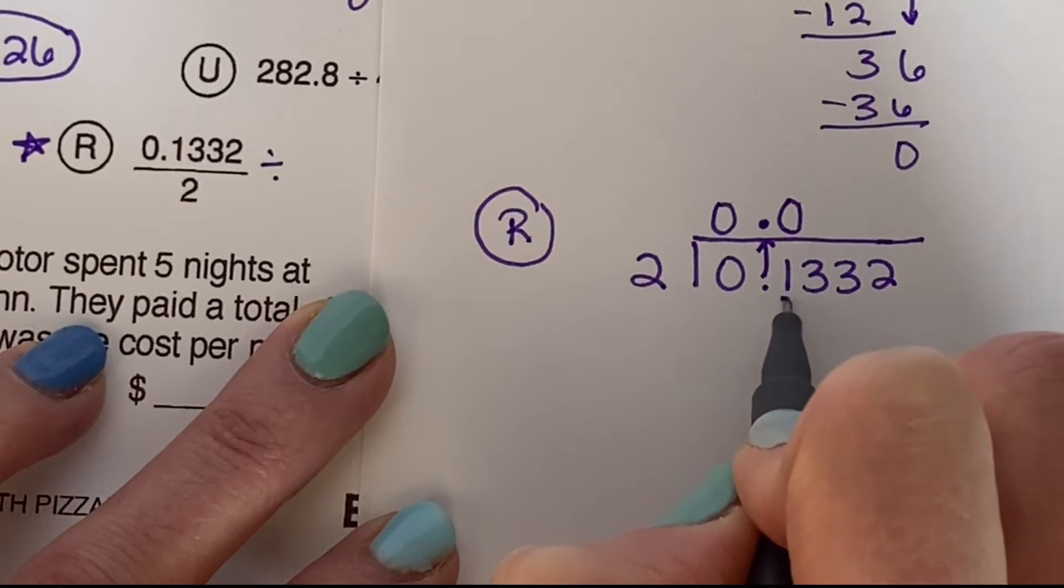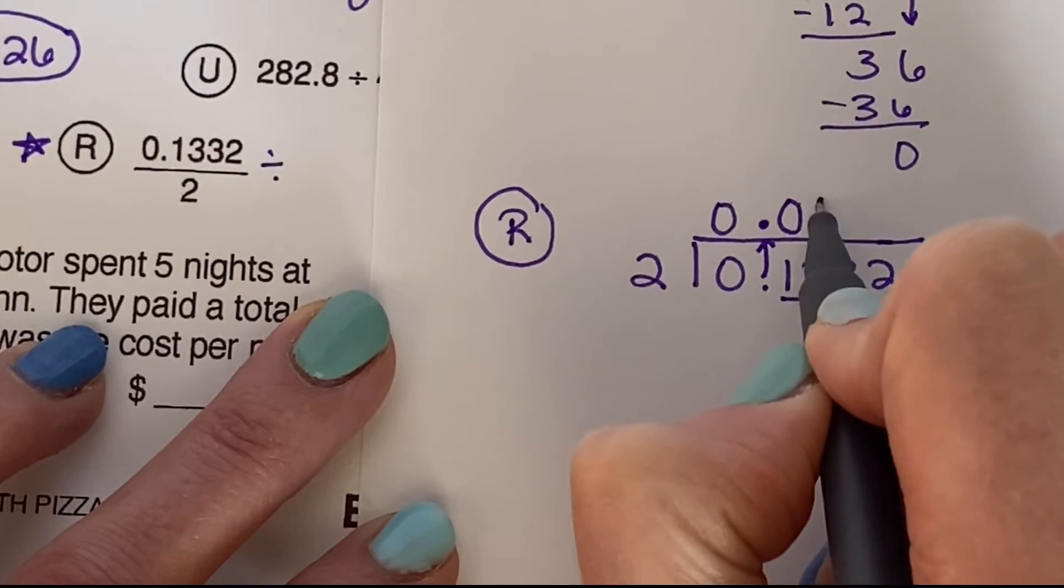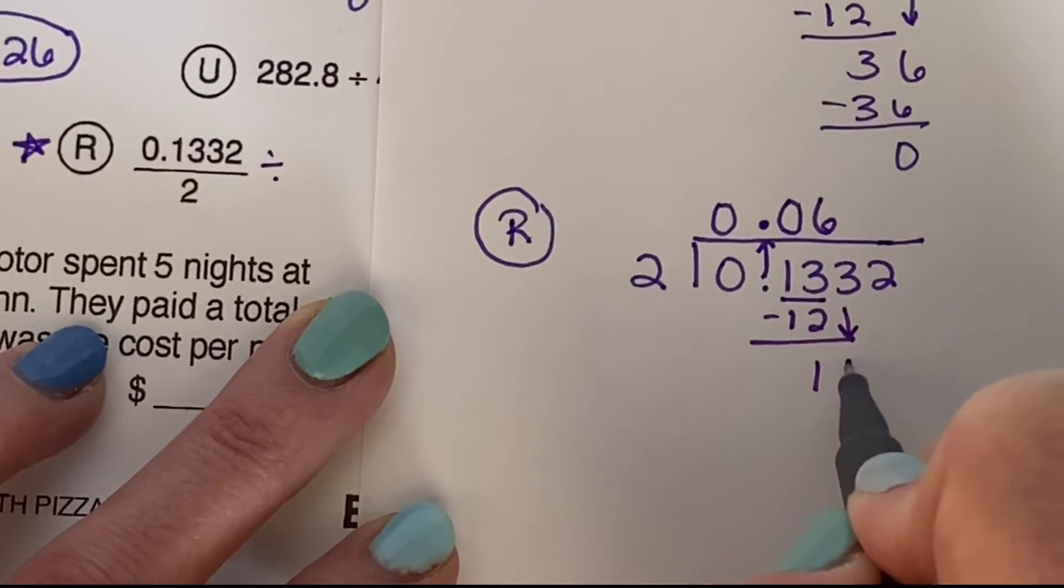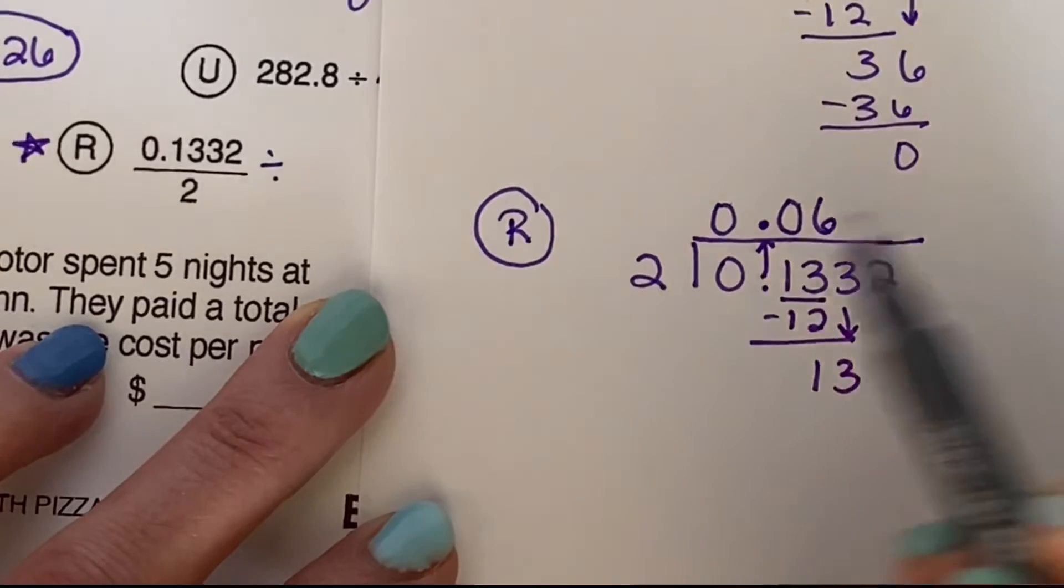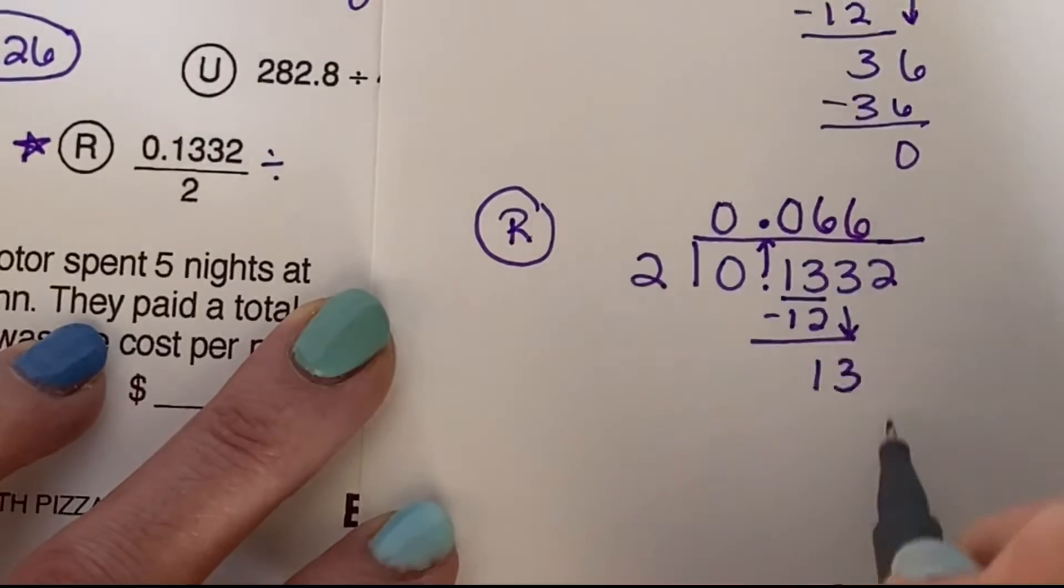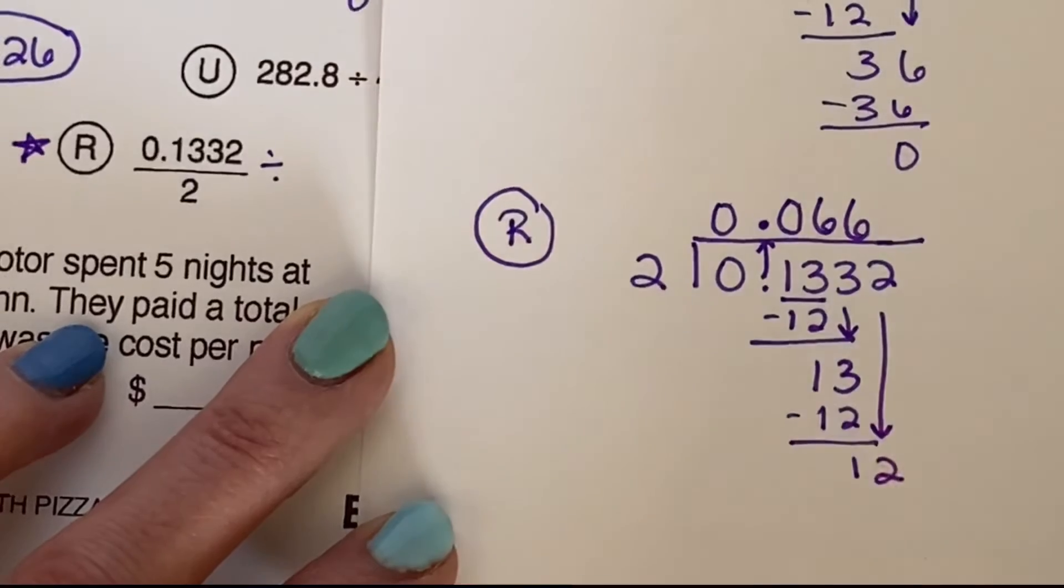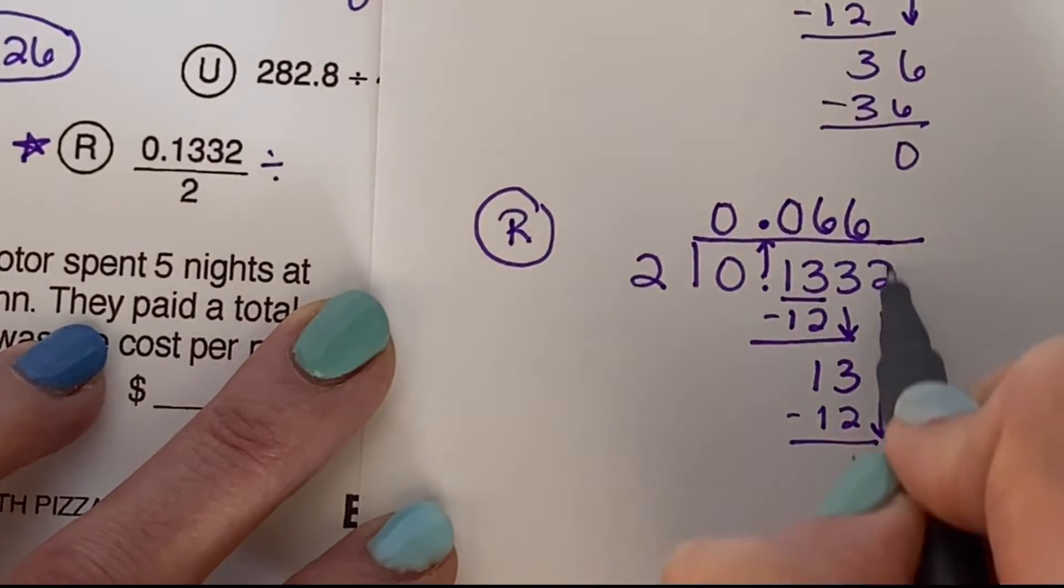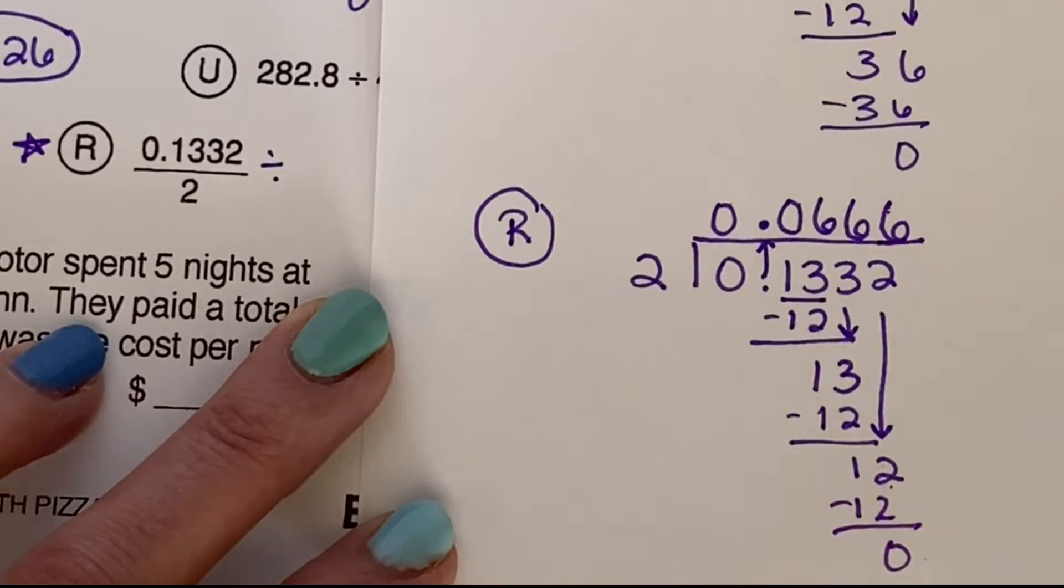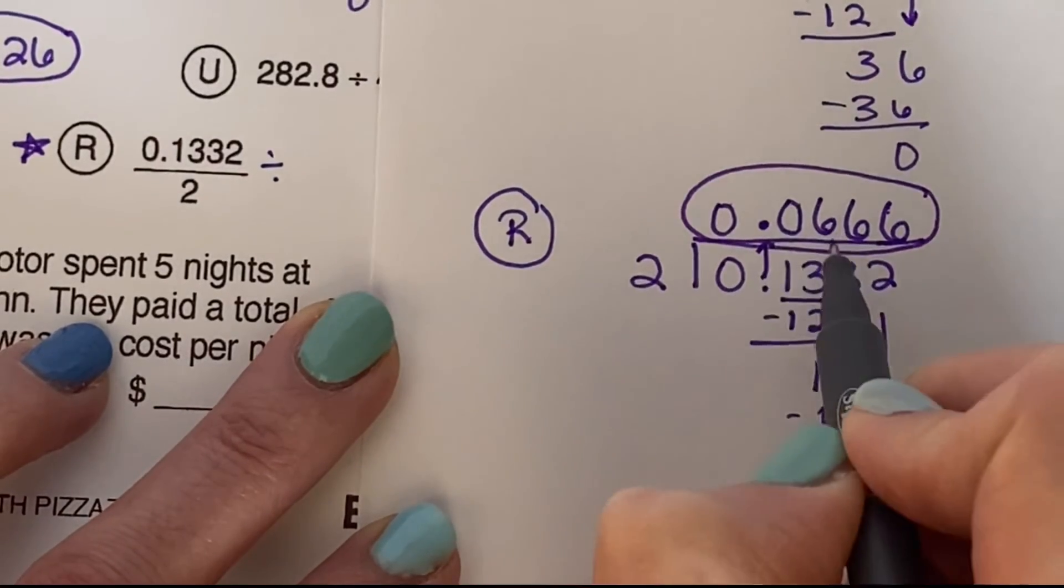How many times does 2 go into 13? Ooh, well, it goes in 6 times. So that 6 goes right above the 3. 6 times 2 is 12. Subtract. Bring down the 3. We have another 13. How many times does 2 go into 13? Still 6. 6 times 2 is still 12. Bring down the 12. How many times does 2 go into 12? Another 6. Lots of 6s. 6 times 2 is 12. Here's our remainder of 0. And our answer is 0.0666.